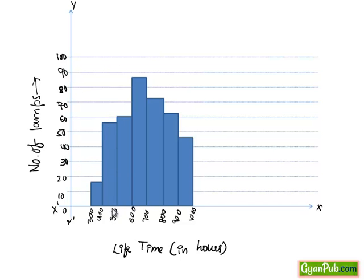For 500 to 600 hours the number of lamps were 60. For 600 to 700 hours it is 86, which is near to 90. And 700 to 800 it is 74. 800 to 900 it is 62, which is a bit above 60. And 900 to 1000 it is 48, which is near to 50.